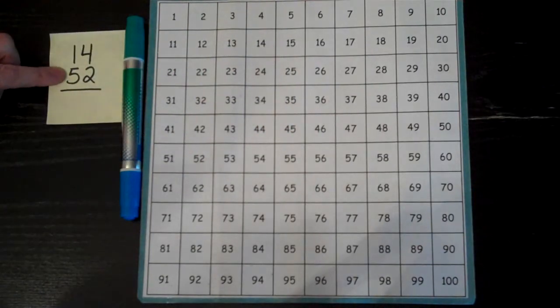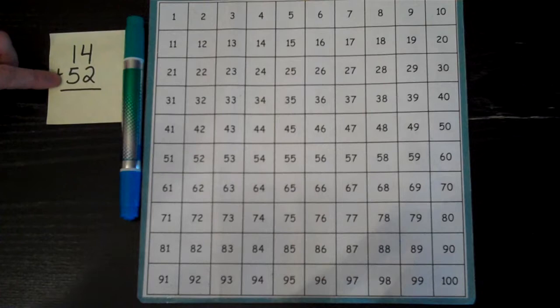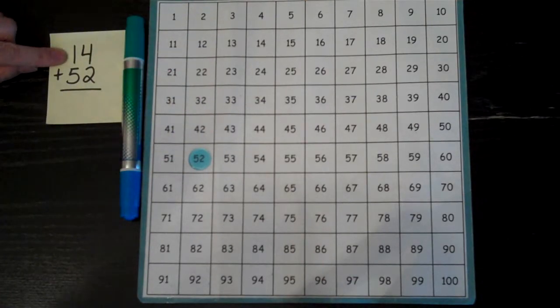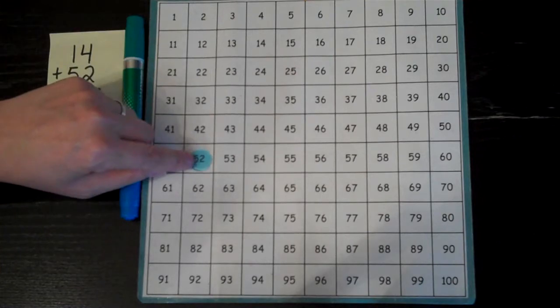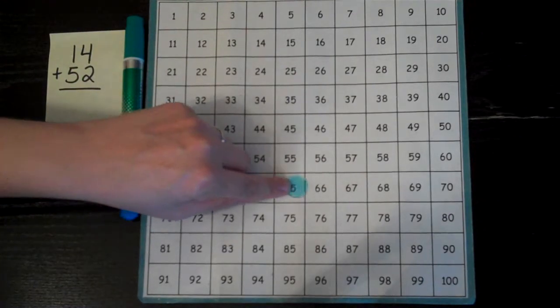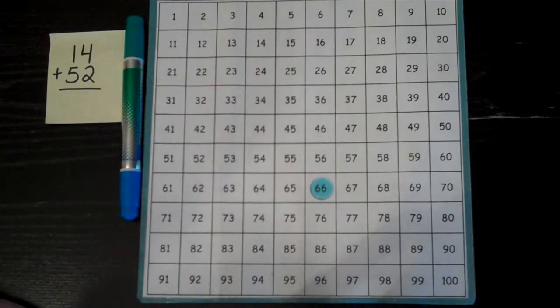So to make this a little bit faster, I could still start at 52. And I can count on 14, but I'm going to go 10, 11, 12, 13, 14. And I get to the same answer.